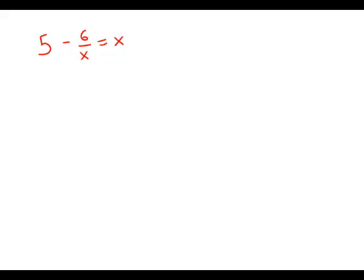If 5 minus 6 over x equals x, then x has how many possible values?